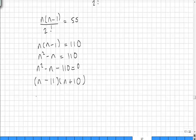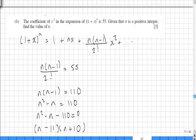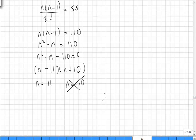So this generates two values of n: n equaling 11 in this bracket and n equaling minus 10. However, in the question it stated that n is a positive integer, therefore n must equal 11.